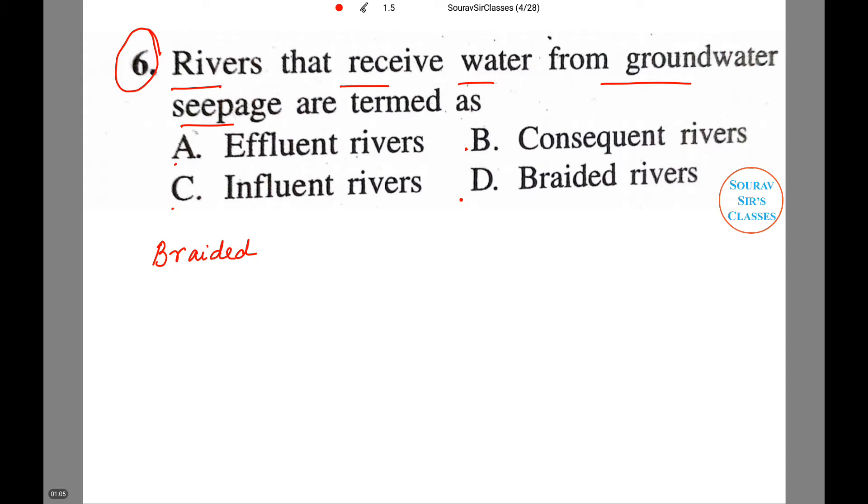So for braided rivers, these are those rivers that exhibit numerous channels that split off and rejoin each other.